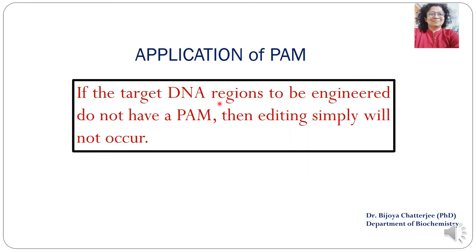If the target DNA regions to be engineered do not have a PAM, then editing simply will not occur. Whenever genome editing has to be done, the target DNA region in whichever species — whether human, rat, or any other plant — it has to be tagged with PAM. If it is not tagged with PAM, then editing will not be possible.